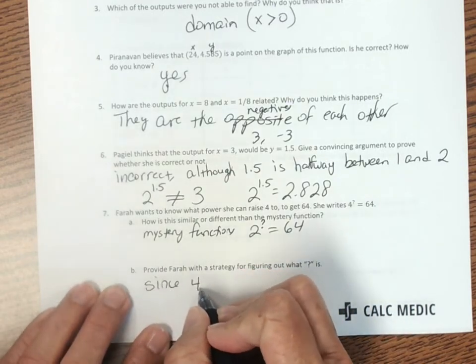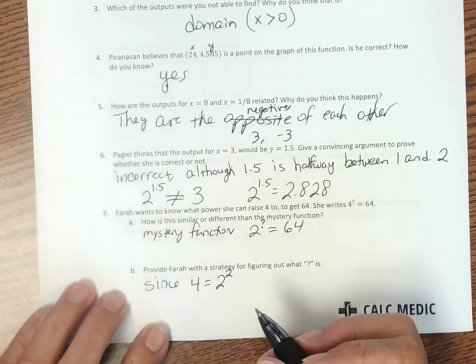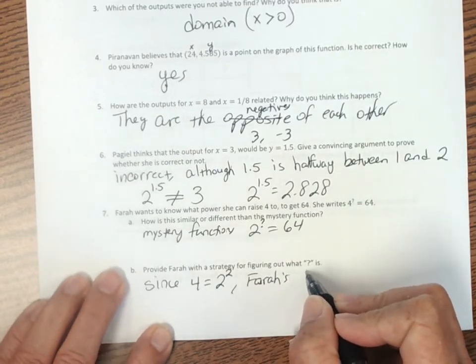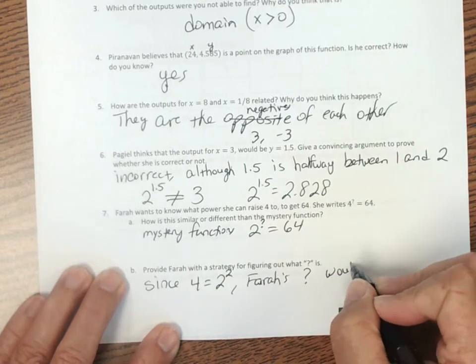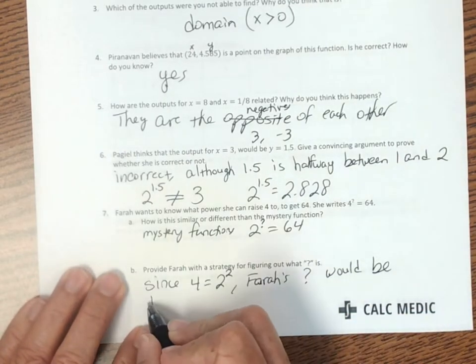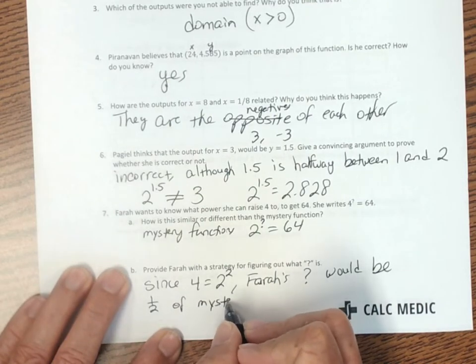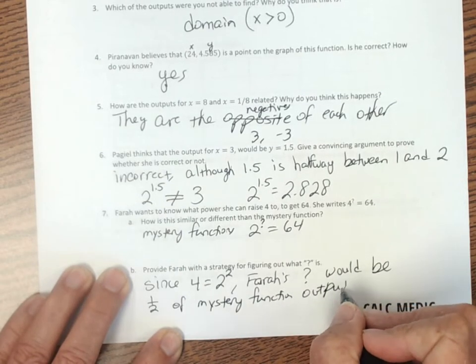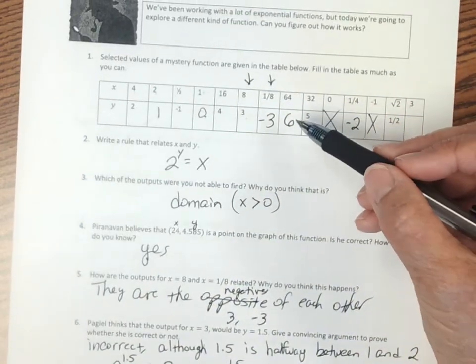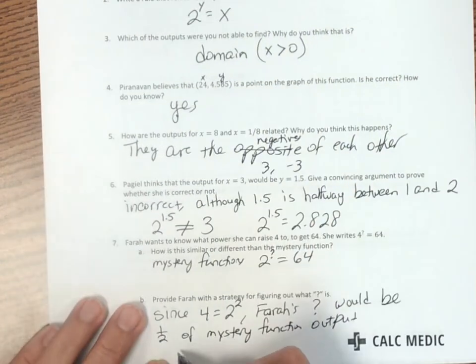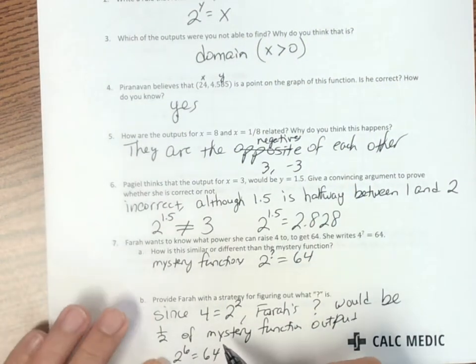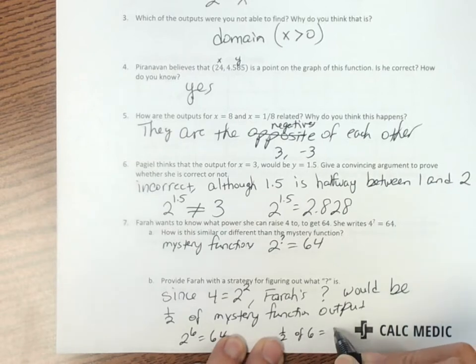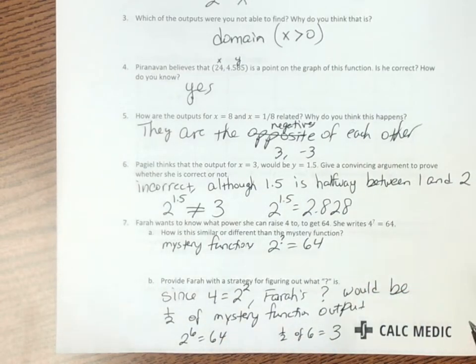Well, since 4 is equal to 2 to the second power, let's see if Farrah's answer, Farrah's question mark or answer would be one half of the mystery function output. So with our mystery function, we have 2 to the sixth power is 64. So 2 to the sixth equals 64. So half of 6 equals 3. That should be the answer for Farrah's problem. And it is.